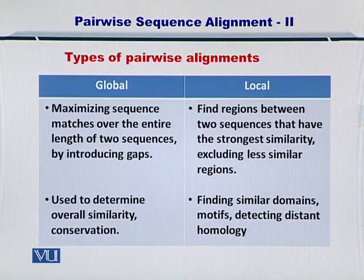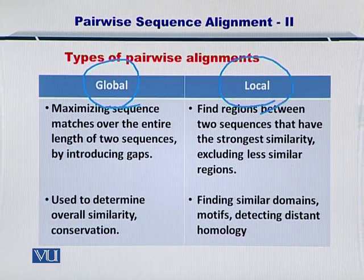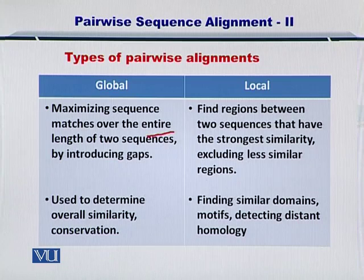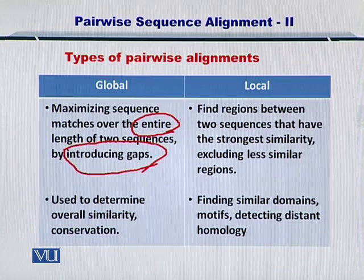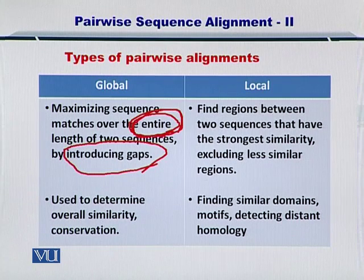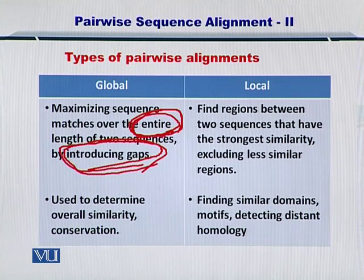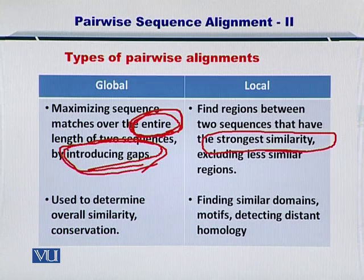There are two types of pairwise sequence alignments in general. One is the global and the other is the local pairwise alignment. In the global pairwise alignment, your aim is to maximize the sequence matches over the entire sequence by introducing gaps. While in the local pairwise sequence alignment, you only go for the strongest similarity within the sequence — it does not have to be the entire sequence. So you are only matching the local portions within the sequence.